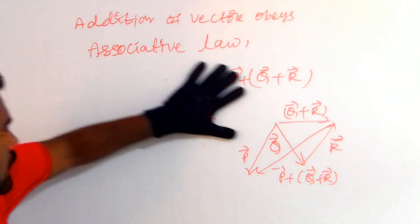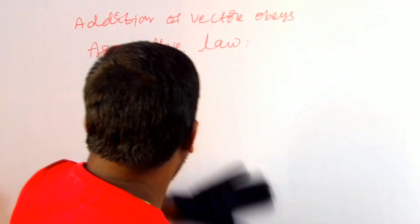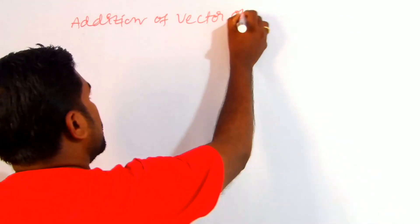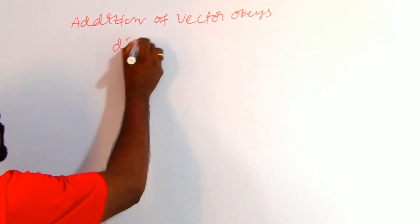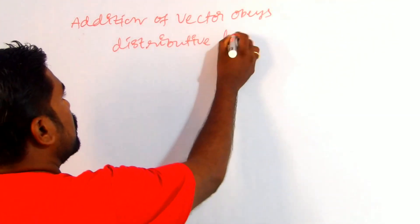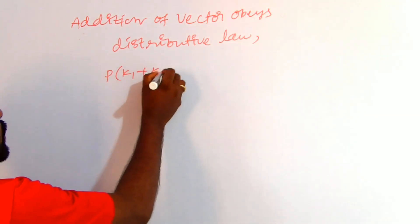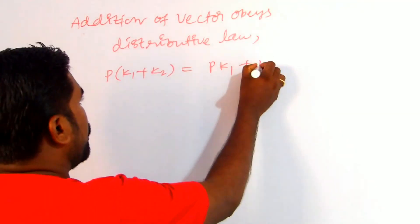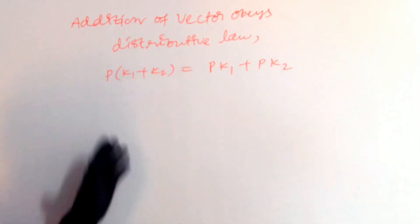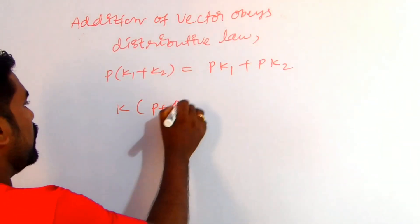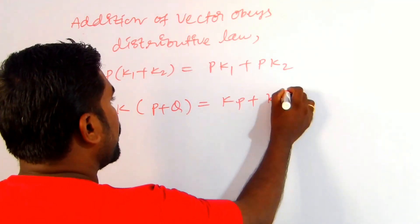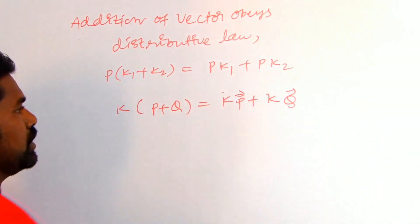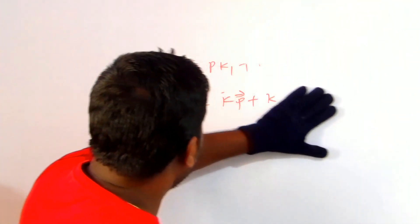Third, addition of vectors obeys the distributive law. This means: p(k1 plus k2) equals pk1 plus pk2, and also k(p plus q) equals kp plus kq, where k is a constant.